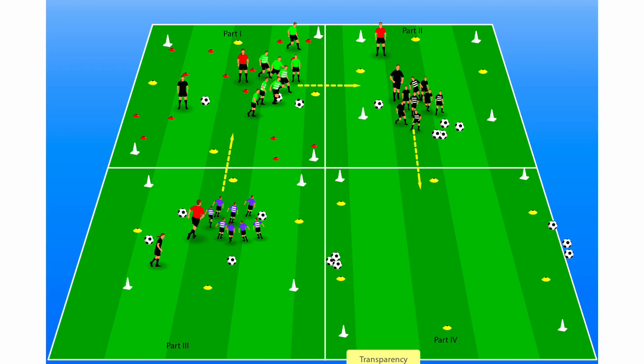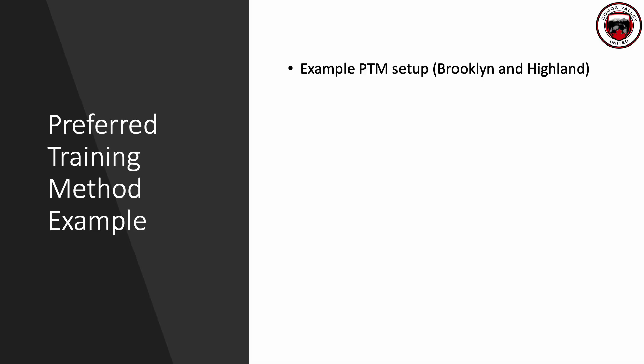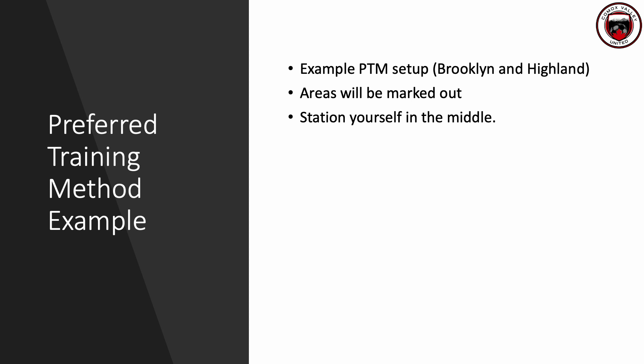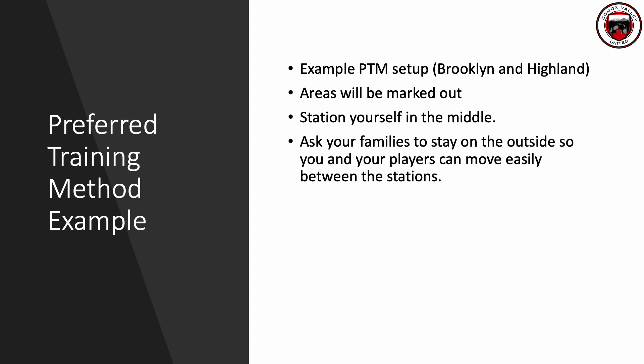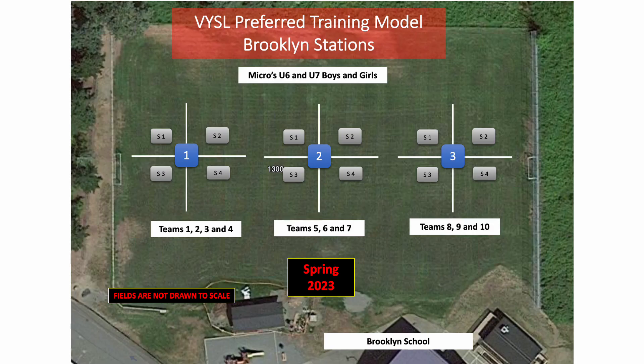Here's a quick display showing how the rotation goes — as the team moves over, the one coach will also move over. The next couple of slides are examples of a training session and how they'll be laid out and marked. Be aware these are from spring 2023 and could be different in your year. Your division managers will provide up-to-date maps and a rotation cycle. The areas will be marked out. Position yourself in the middle and ask families to stay on the outside so players can move to stations most easily.